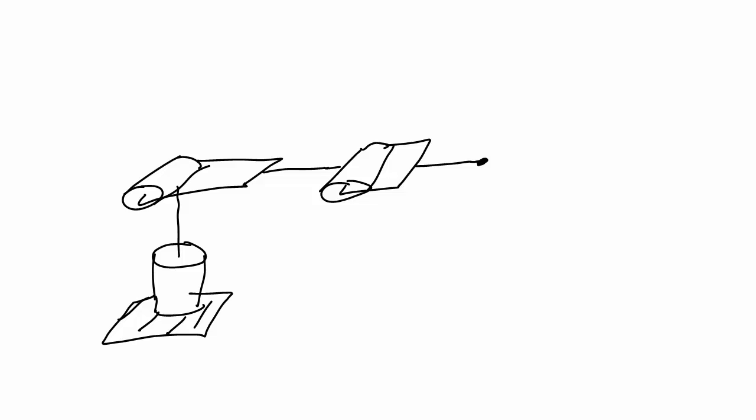I'm showing here a kinematic diagram of an articulated manipulator that matches the one we built in the last video. When we tested our switches in the last video, we determined which direction of rotation was positive for each of these servos. I'm going to draw that direction in here. If your directions were different than mine when you tested your switches, fill in your kinematic diagram the positive directions that you found in your servos.